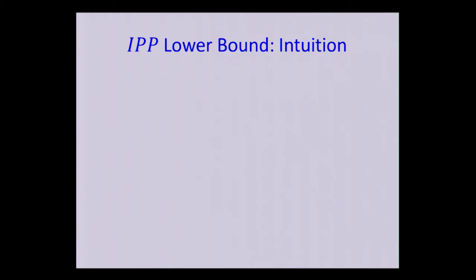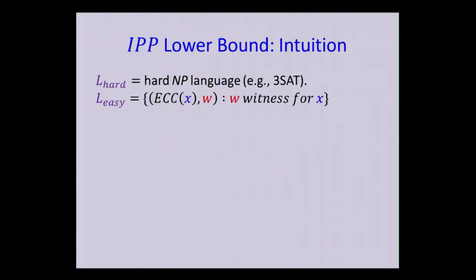So I want to give you a little bit of intuition about this lower bound. So the idea is to look at a hard NP language. Let's say, for a minute, let's think of the language as being 3SAT. We don't know how to make it actually work with 3SAT, but let's think of that for a second. And let's consider a related language, which is actually quite easy to compute. So the inputs of this language consists of pairs of Xs and Ws. The Xs are an error-correcting code. For a second, you can ignore that. But think of the instances as being composed of instances and witnesses. And what you want to check is that the witness is valid. So think of you're getting a formula and an assignment, and you want to check that the assignment satisfies the formula. This is this language, L-Easy.